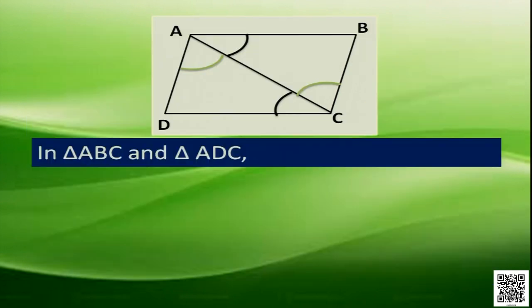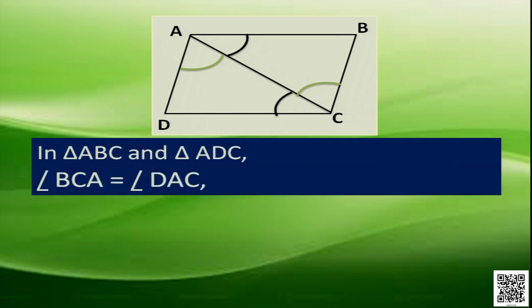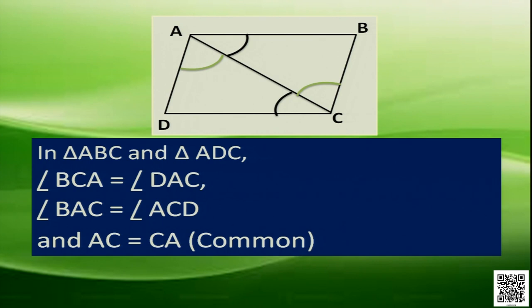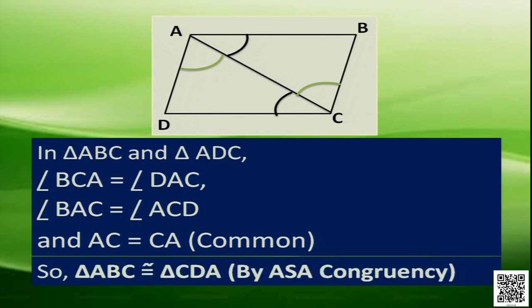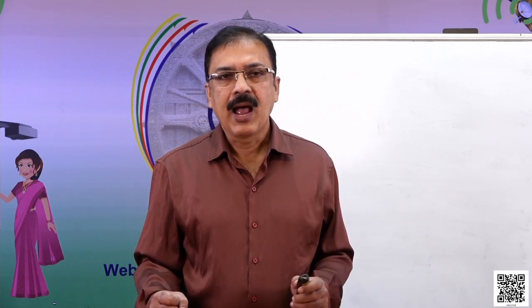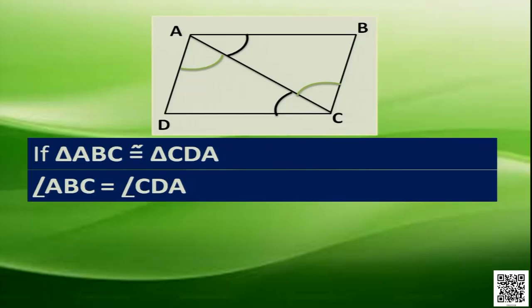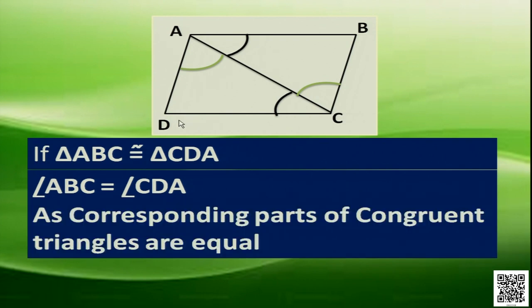In triangles ABC and ADC: angle BCA equals angle DAC (equation 1), angle BAC equals angle ACD (equation 2), and AC equals CA (common side). So these two triangles are congruent by the Angle-Side-Angle property. Therefore, angle ABC equals angle CDA, as they are corresponding parts of congruent triangles.